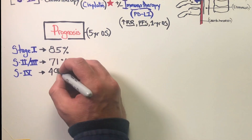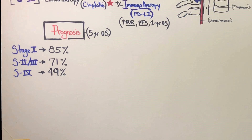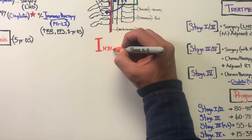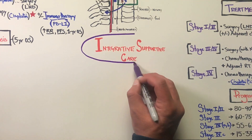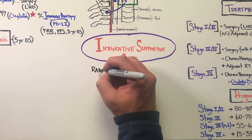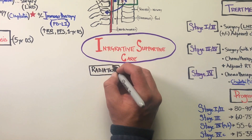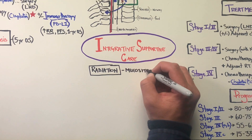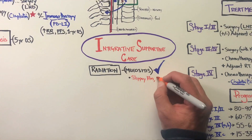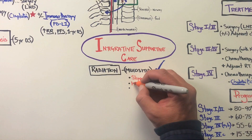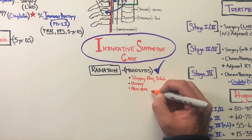Five-year overall survival, again based on staging, is quite good for early stage diagnoses and does decrease as we move to higher stages. One of the greatest benefits that integrative oncology has to offer patients moving through these therapies is the prevention, mitigation, and treatment of mucositis — the mouth sores that can occur in the oral cavity, throat, and esophagus of individuals receiving radiation to the head and neck.